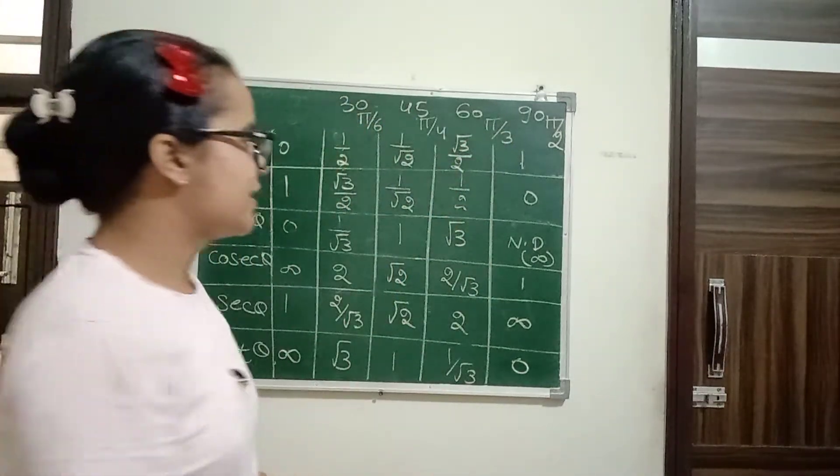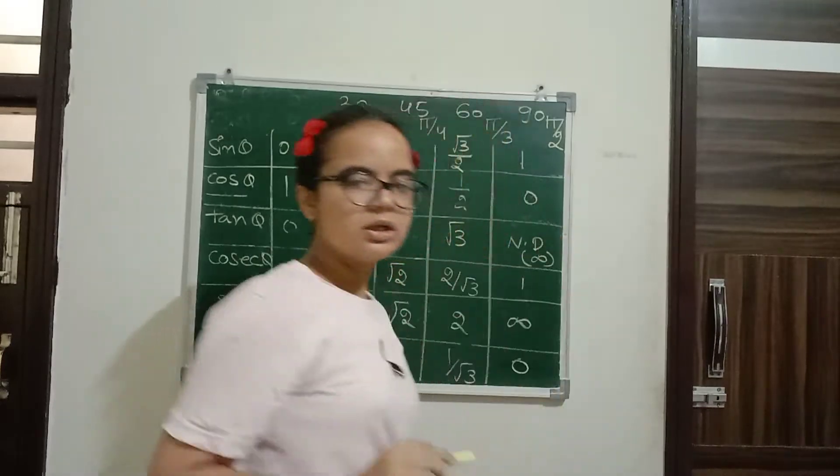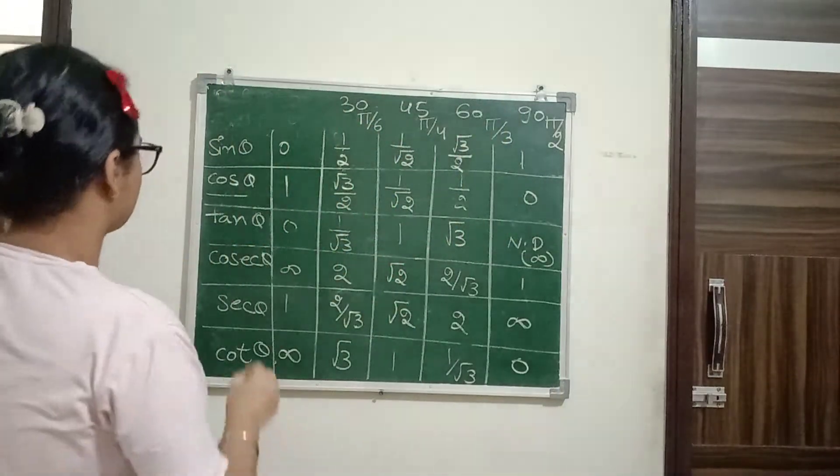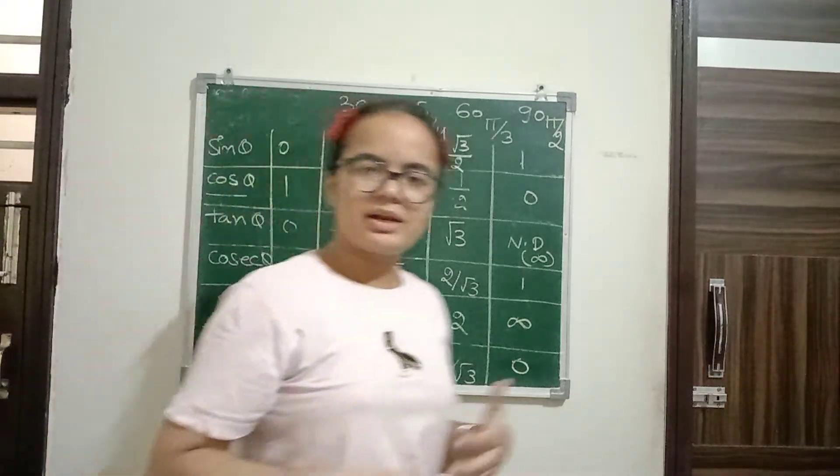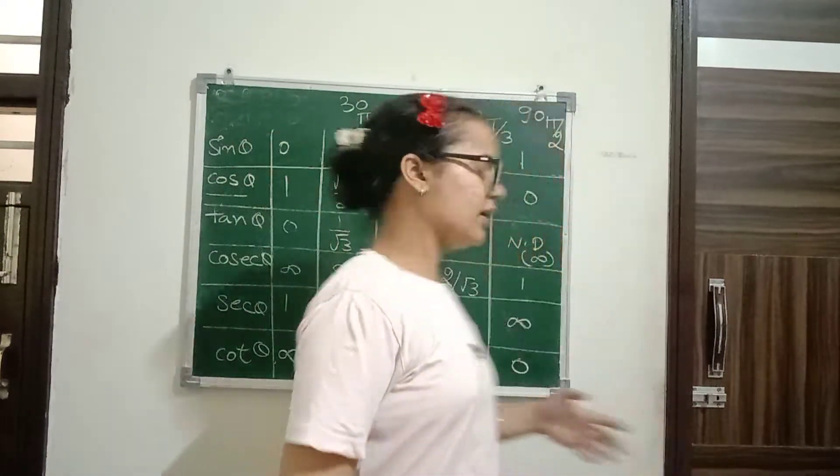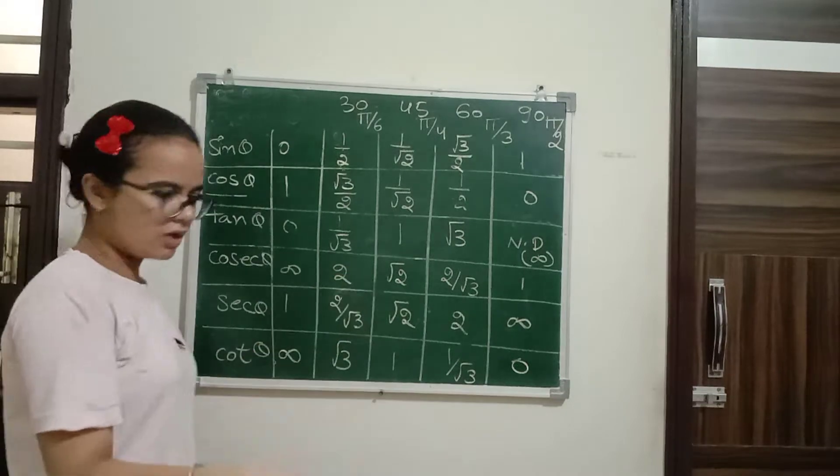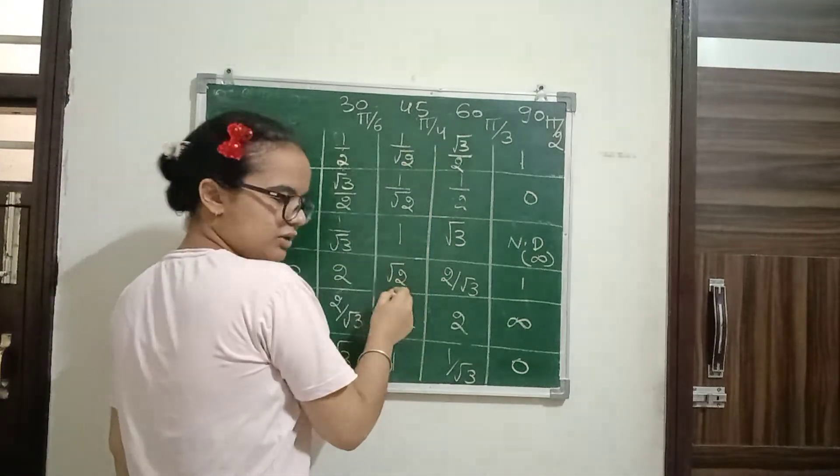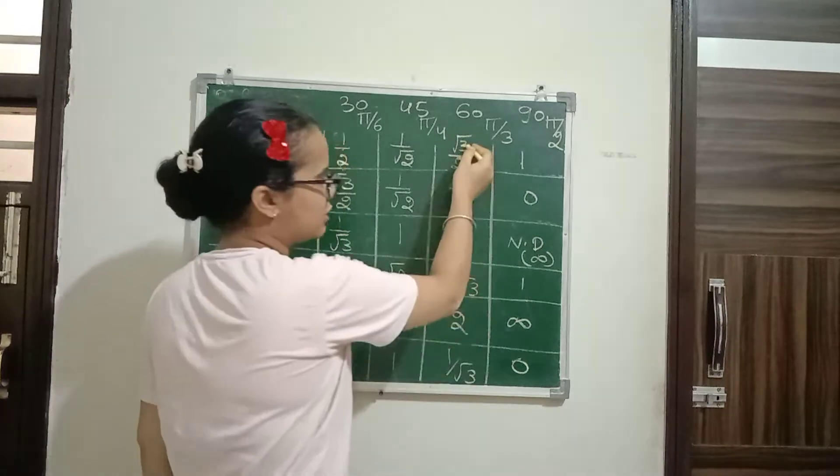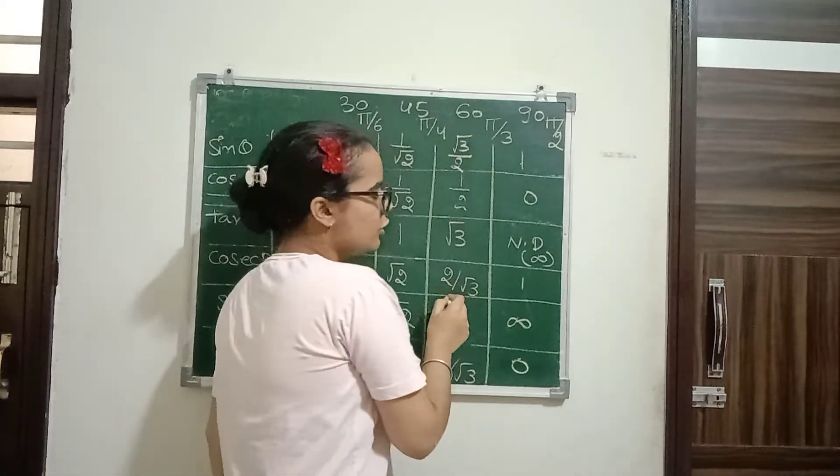Secant is the reciprocal of cos theta. Sin theta zero is not defined, one by two gives two, one by root two gives root two, root three by two gives two by root three, and one gives one.